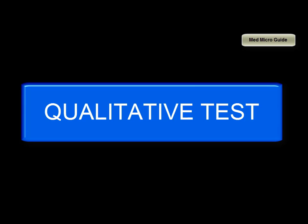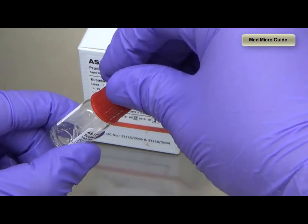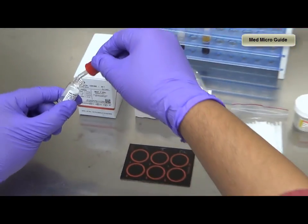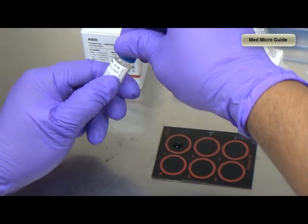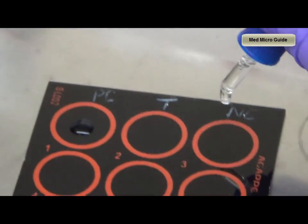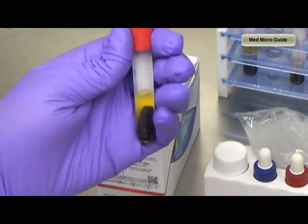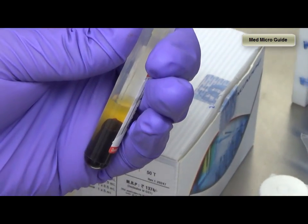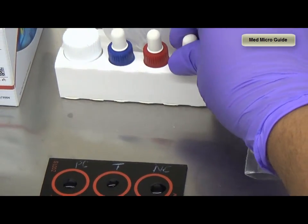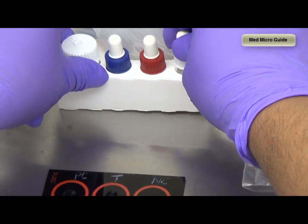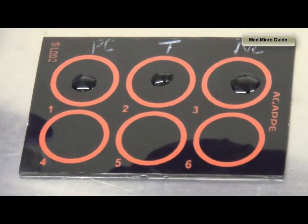Now we will see the qualitative estimation of ASO. The slide is labeled for positive control, negative control, and test sample. We will add one drop of positive control to the well and a drop of negative control. We will add a drop of serum — or we can add the volume of serum as described by the kit literature. In this case, I am adding 50 microlitres of the test serum. Now we will add one drop of the ASO reagent to each of the circles.